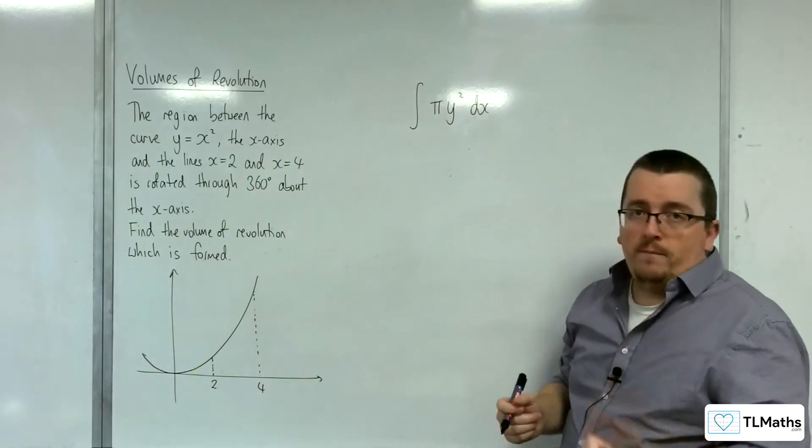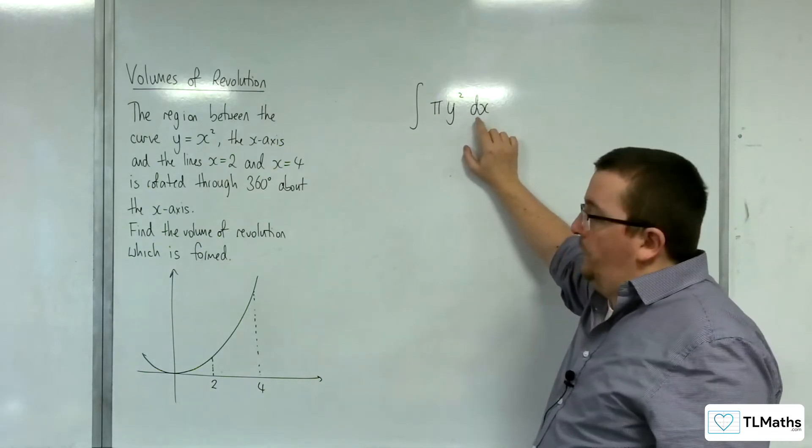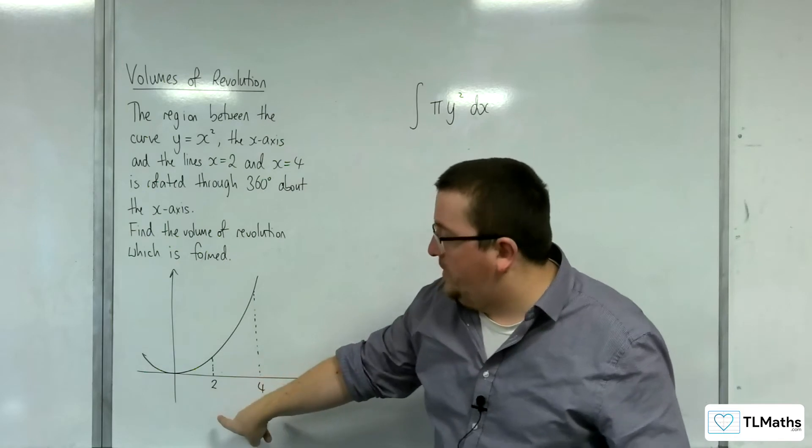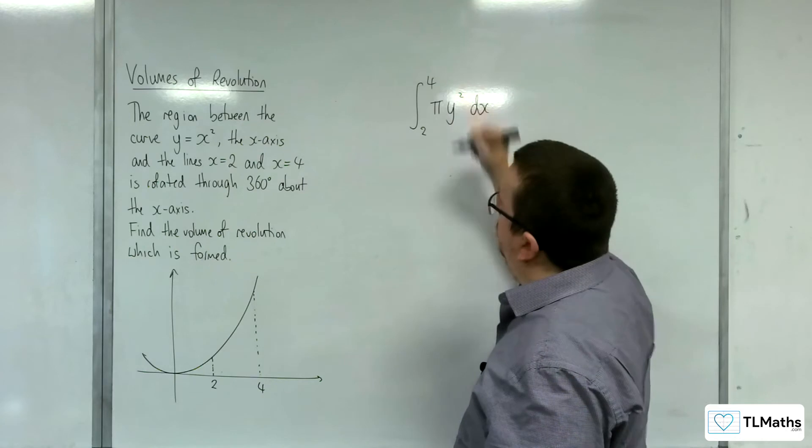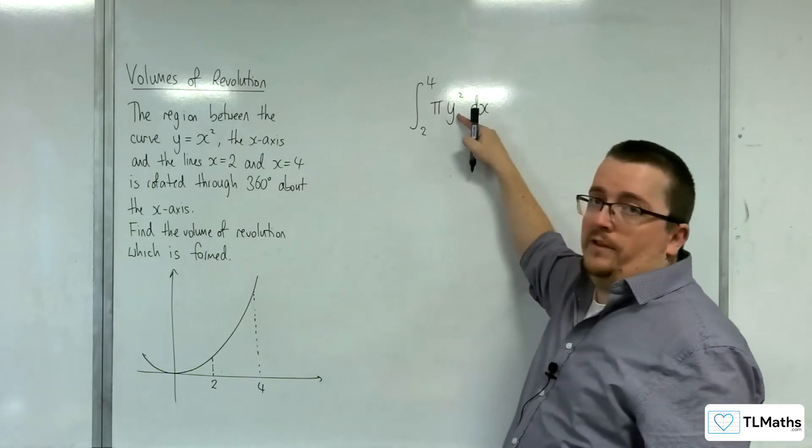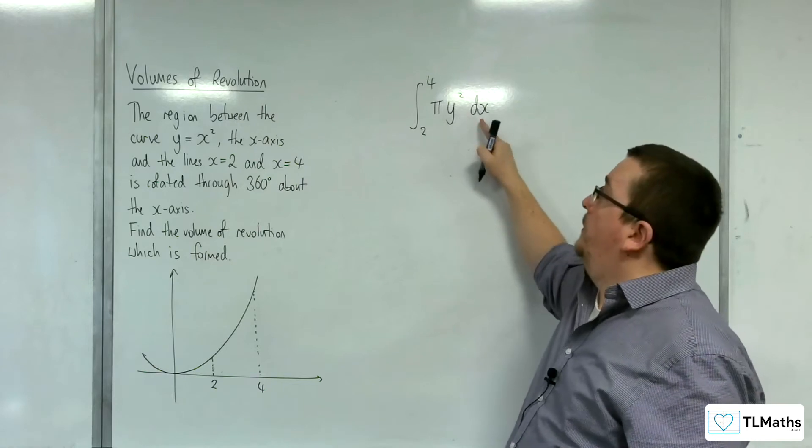Now the other way to remember this is that you know it's going to be dx because you're integrating it between two x values on the x-axis, between 2 and 4, and this variable will always be the other one, opposite to the x.